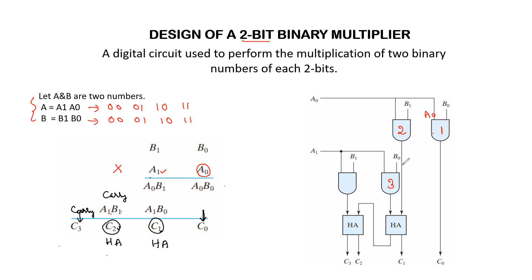The outputs of these two AND gates are connected to the first half adder, which provides sum bit C1 and a carry to be added to the next order bits. The inputs of the second AND gate are A0 and B1, taken from the respective connections. For A1 B0, B0 and A1 are the inputs, and the output is also connected to the half adder, from which we get the sum and carry.